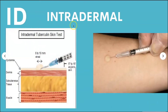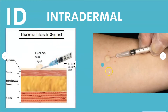ID stands for intradermal. 'Intra' means in, so intradermal means in the dermal layer of the skin. If you're giving an intradermal injection, you're only injecting at an angle of 5 to 15 degrees. This is from the CDC site — when performing a tuberculin skin test, you need to see a wheal. If you don't see a wheal during the TB test, you didn't perform it properly. A proper TB test should produce a wheal of 6 to 10 millimeters; if it's not 6 to 10, you probably went too deep.